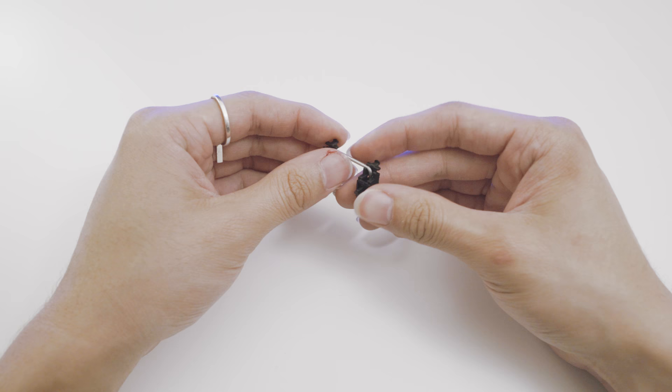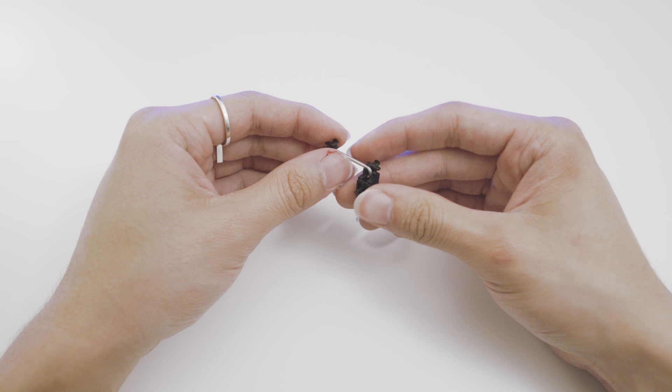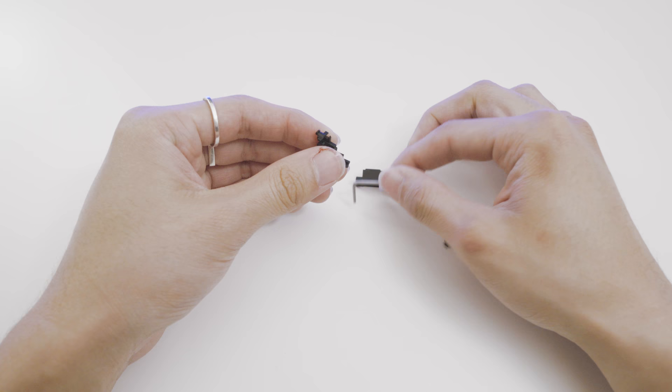First, we begin by disassembling the stabilizer. This is just a matter of twisting and pulling out. Remove the stems from the stabilizer.